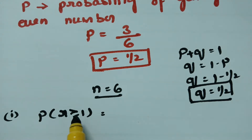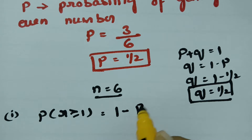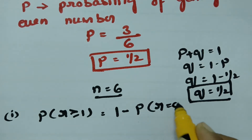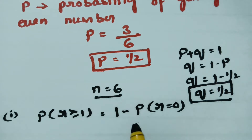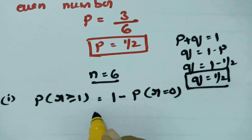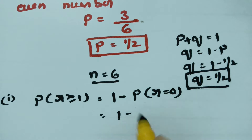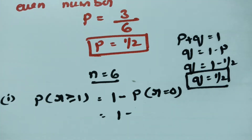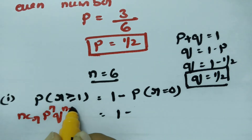At least 1 means R can be 1, 2, 3, 4, 5, or 6. Instead of computing all these, we use the complement: 1 minus P(R = 0). The formula is NCR × P^R × Q^(N−R). With N = 6, this becomes 1 minus 6C0 × (1/2)^0 × (1/2)^6.